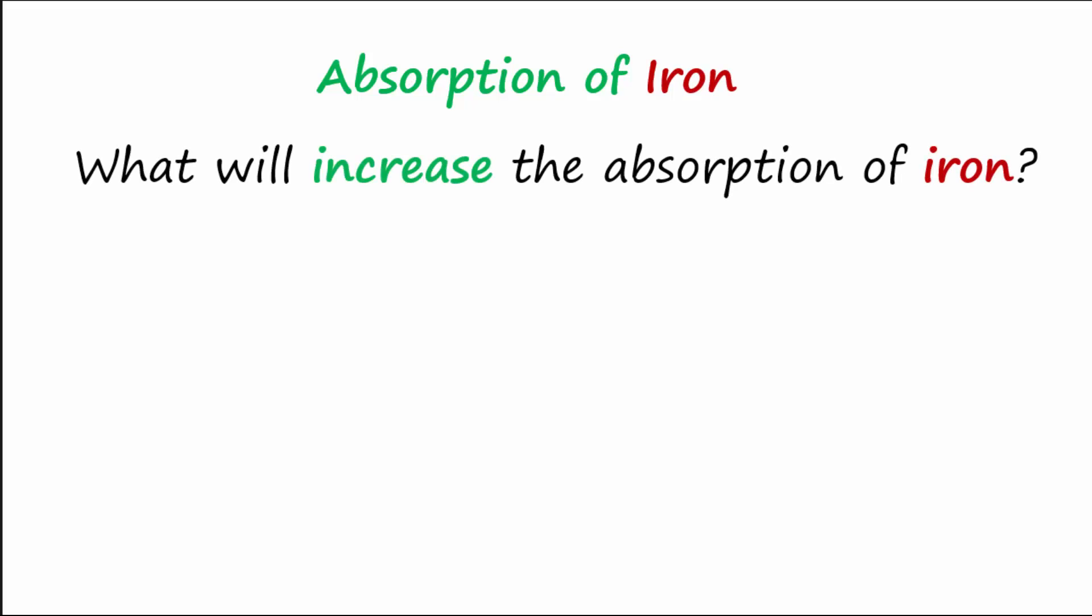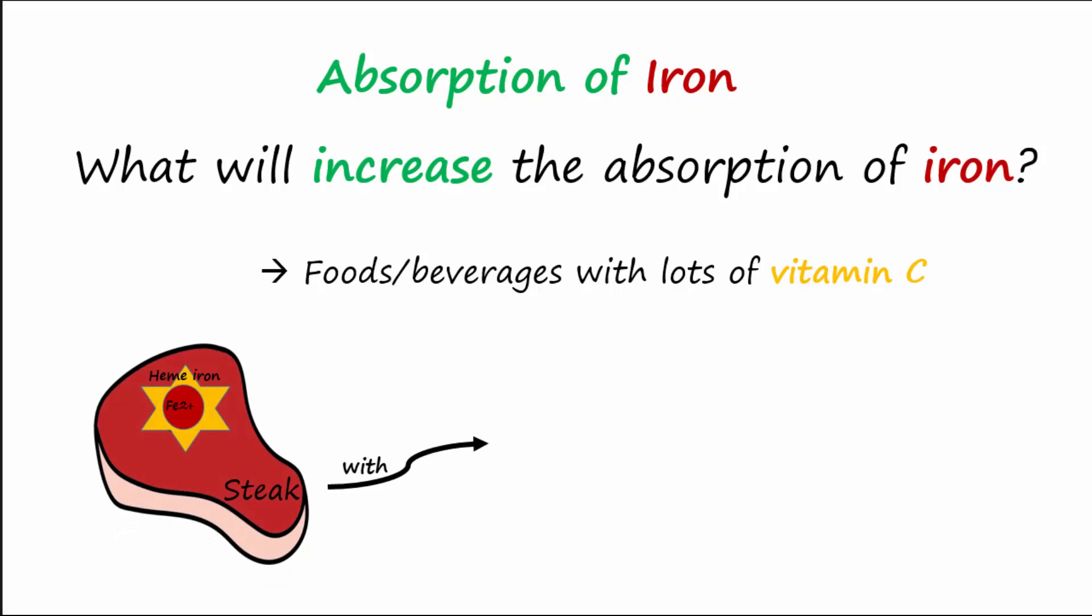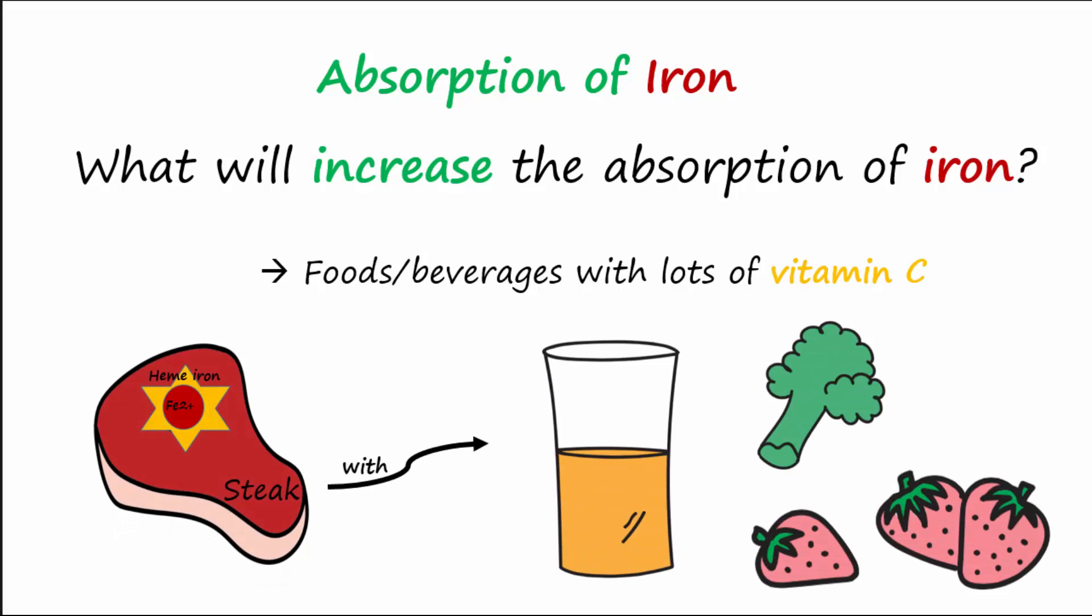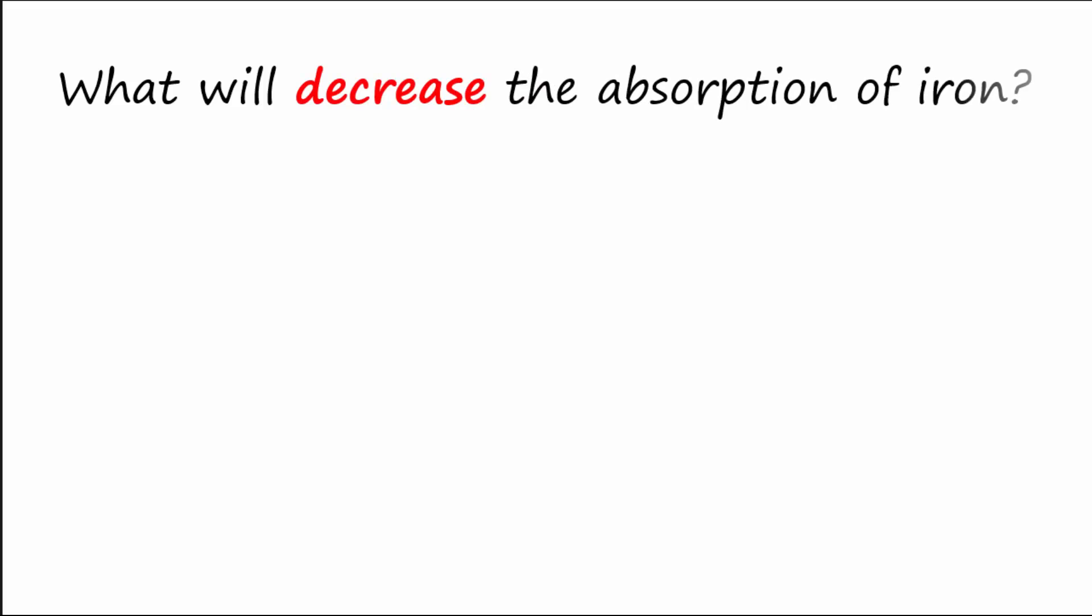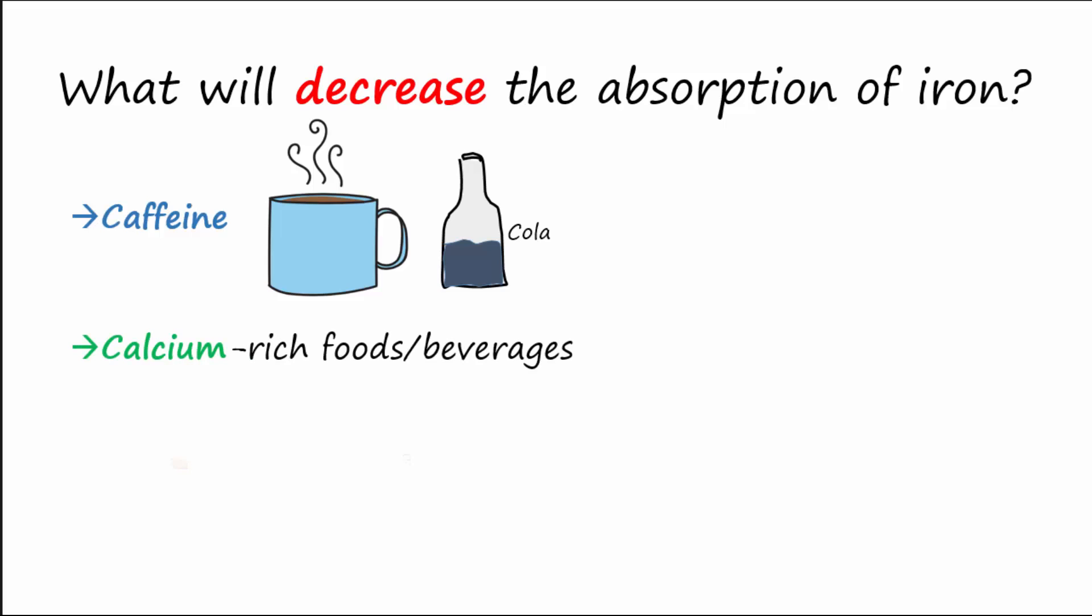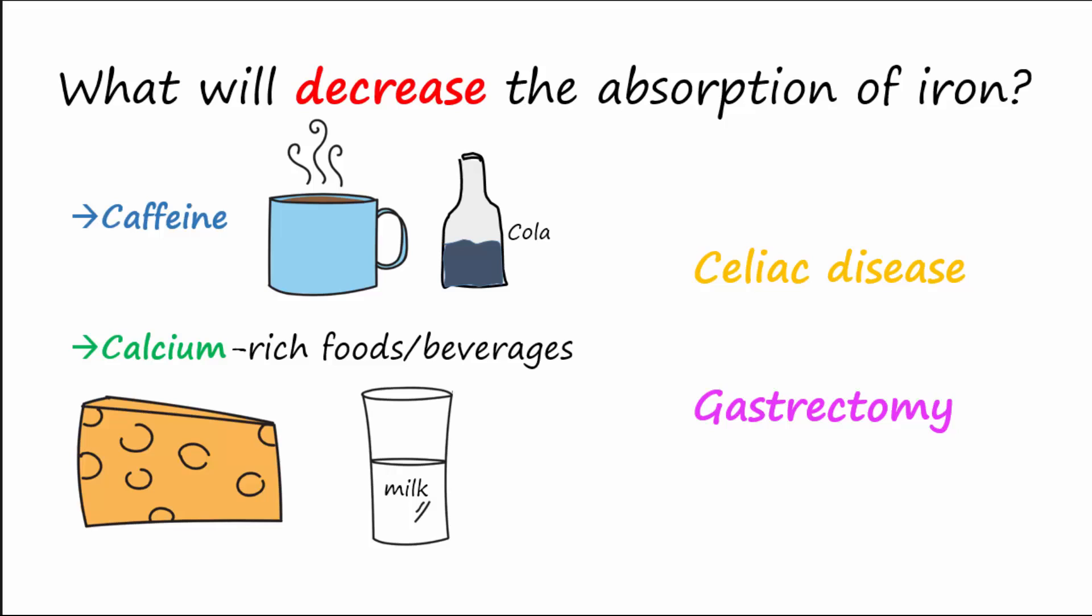Some foods increase the absorption of iron, like foods with lots of vitamin C. So if you eat your steak with things like orange juice, strawberries, or broccoli, you'll be increasing iron absorption. Some foods and beverages do the opposite. Caffeinated beverages and calcium-rich foods like dairy products will decrease iron absorption. Conditions affecting the small intestine like celiac disease will also decrease absorption. Gastrectomy will bring about an increase in the pH of the duodenum which will also decrease the absorption of iron.